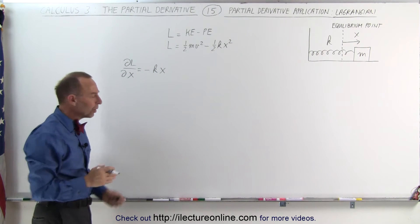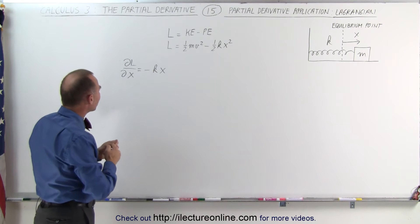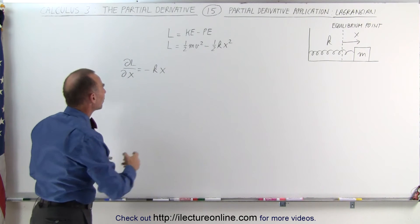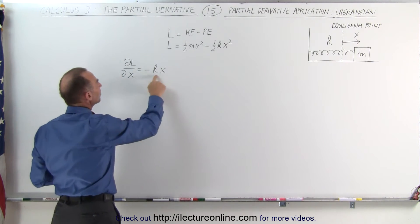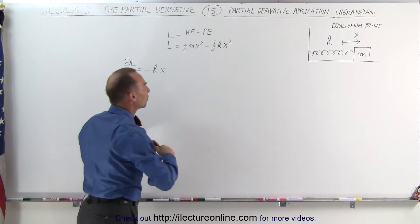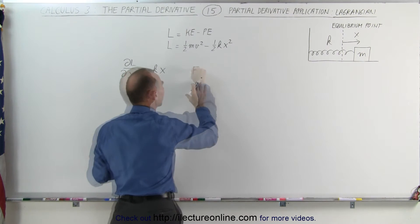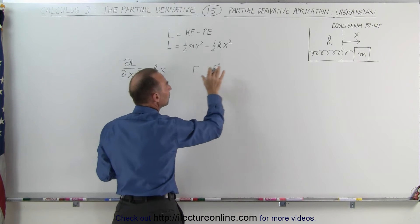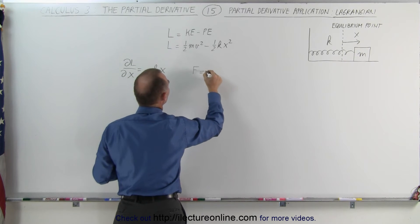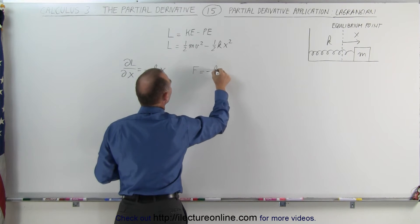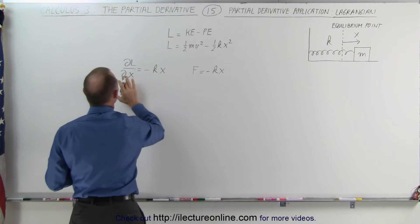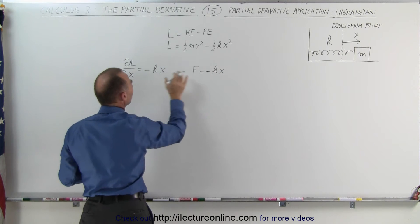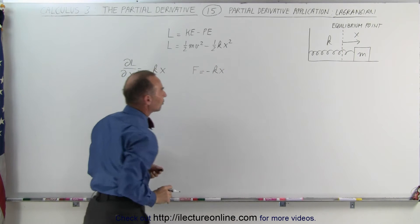What is the meaning of the partial of the Lagrangian with respect to x? Well, it turns out we get minus kx, and when we're dealing with springs, that means it is equal to the force of the spring pulling on the mass. So this is equal to minus kx, which means that the partial of the Lagrangian with respect to x is equal to the force applied to the system.